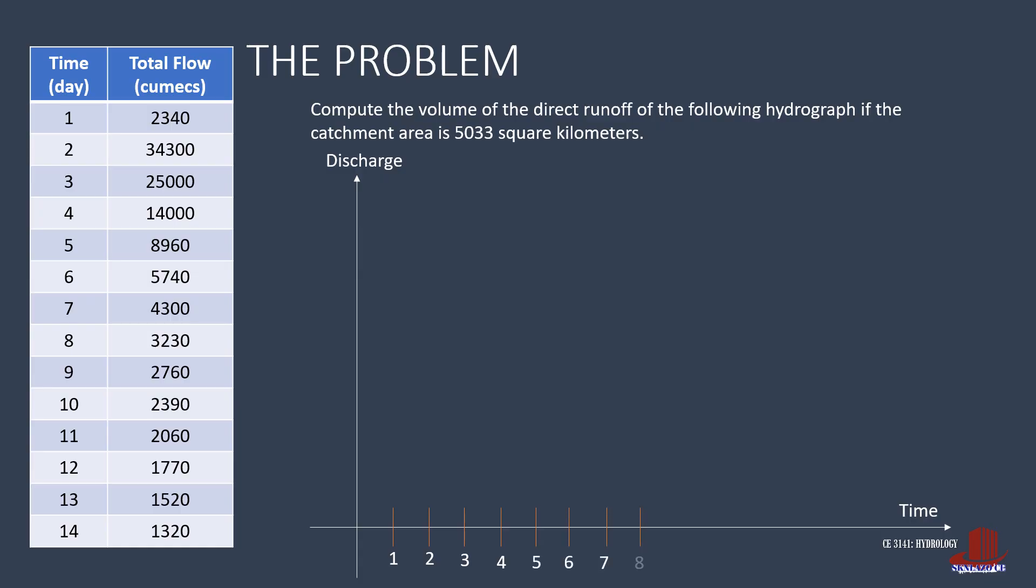So first, we draw the hydrograph. Take note that the x-axis, which is for time, is in days. Then the total flow is still in cumecs. That is cubic meters per second. The highest flow is almost 35,000. So, with the small space we have, we place intervals of 7,000 cumecs. Now check intersections of each pair of coordinates in order to plot the points in the hydrograph. After which, connect these points to create the curve.